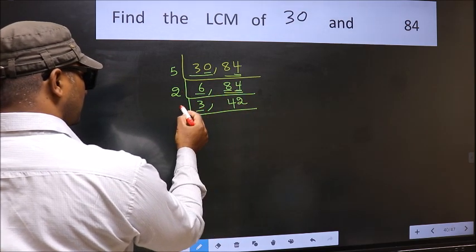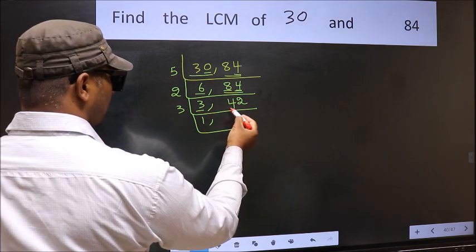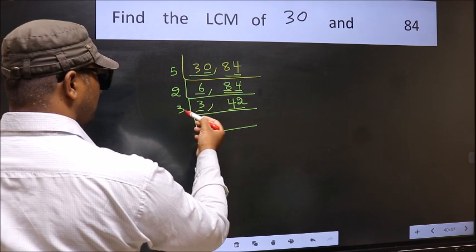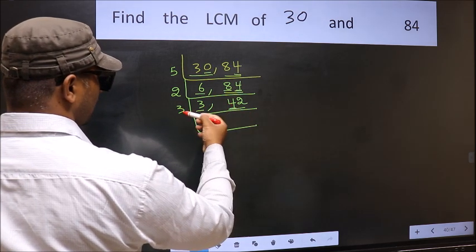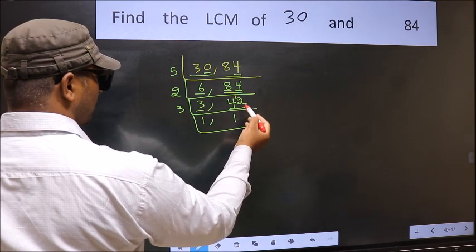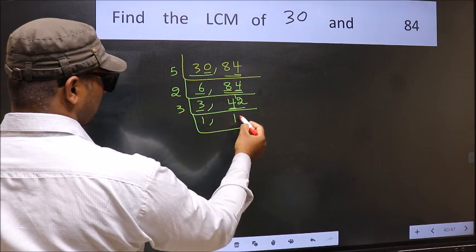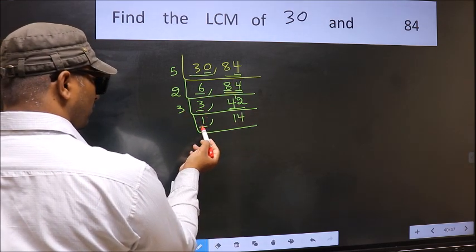Now here we have 3, 3 is a prime number. So 3, 1 is 3. The other number, 42 is divisible by 3. First number, 4. A number close to 4 in 3 table is 3, 1 is 3. 4 minus 3, 1, 1 carried forward, 12. When do we get 12 in 3 table? 3, 4 is 12. Now we got 1 here.